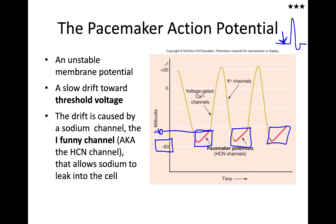From there, we go upward toward just a little above minus 20. That's different from the neuron, where we started at minus 70, went to plus 30, down to minus 85, and then back to minus 70.